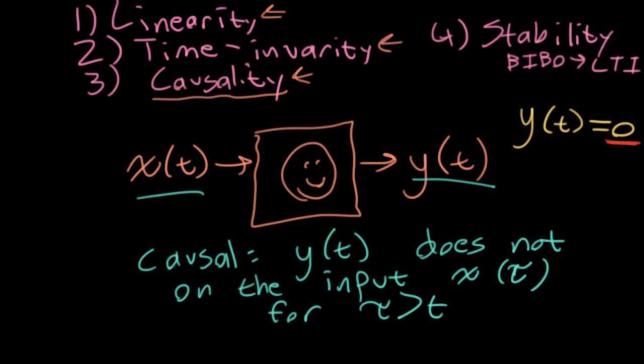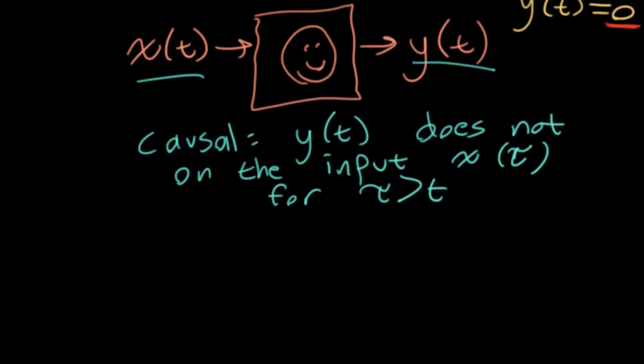Basically, a causal system is one that you can actually implement as a real-time device. It's perfectly okay to talk about non-causal systems if you're thinking about post-processing data. If you've already recorded data on a hard drive and you are processing it after the fact, you can run an algorithm that implements a non-causal data processing system. Compared to linearity and time invariance, it's usually fairly obvious whether the system is causal or not.